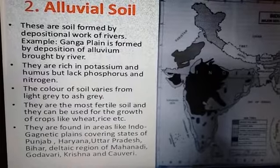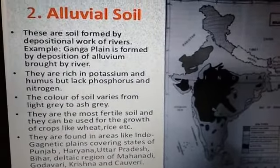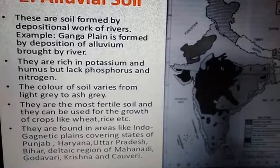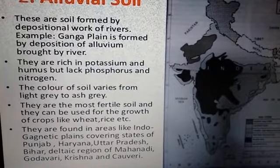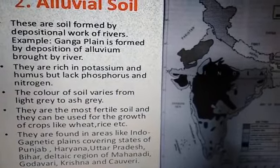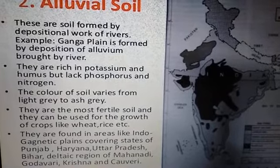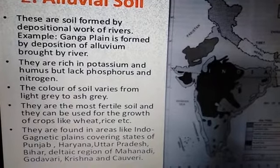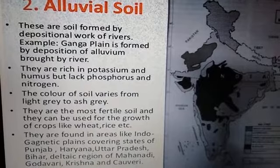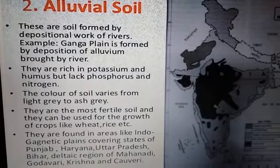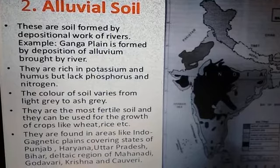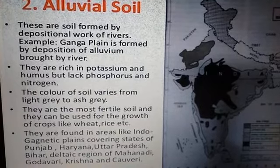Alluvial soil is rich in potassium and humus but lacks phosphorus and nitrogen. The color of the soil varies from light gray to ash gray.